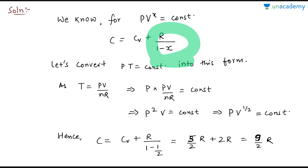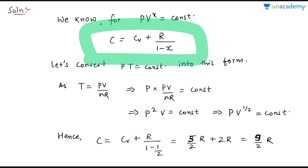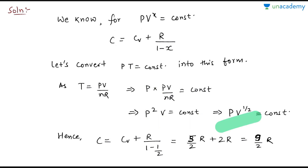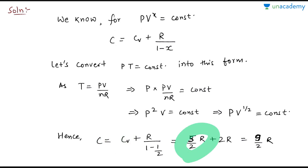The question gives us a relation between P and T, not P and V, so we substitute T = PV/nR. We get P²V/nR = constant, and since nR is constant, P²V = constant. Taking the square root, PV^(1/2) = constant, so x = 1/2. For a diatomic gas, Cv = 5R/2, so C = 5R/2 + R/(1 − 1/2) = 5R/2 + 2R = 9R/2.